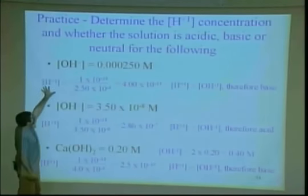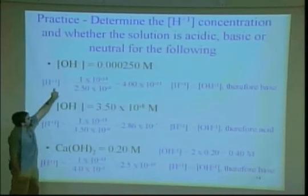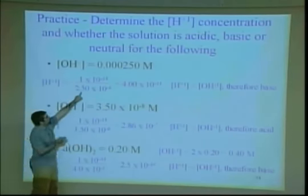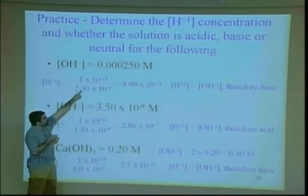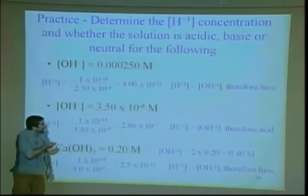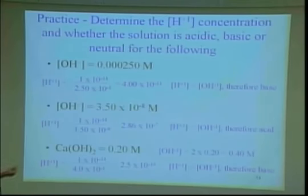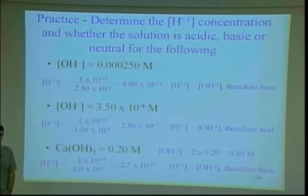Solving: hydrogen concentration equals Kw divided by hydroxide = 1×10⁻¹⁴ divided by 1×10⁻⁸ = 4×10⁻¹¹. Wait — actually the hydroxide here is 0.000250, giving hydrogen = 4×10⁻¹¹. That's much less than the hydroxide concentration, which means there's a lot more hydroxide ions than hydrogen ions. Therefore it's going to be basic. Even if it's a very weak one, it's a basic solution — if you test the pH, it'll show up as a base.